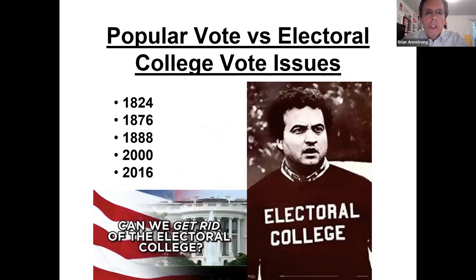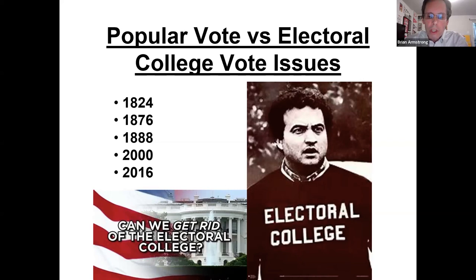Popular vote versus Electoral College vote has always been a big discussion. There are five elections where the candidate who got the most popular votes did not win the electoral vote: 1824, 1876, 1888, 2000, and 2016. We're not sure what will happen in the next election, but this is the history so far.